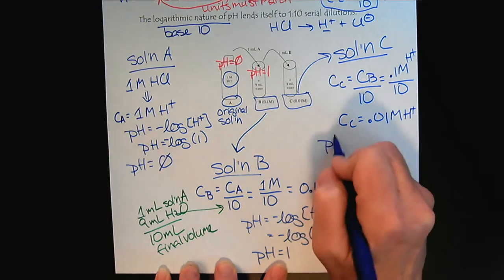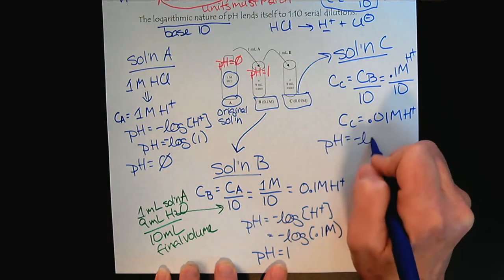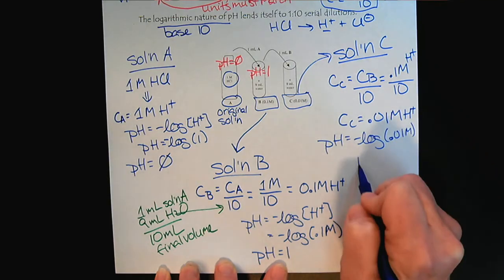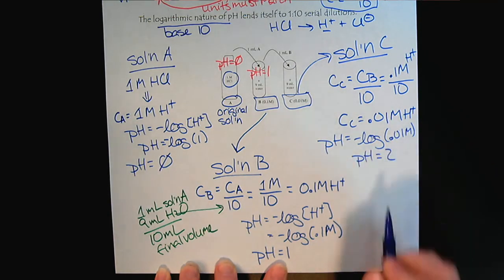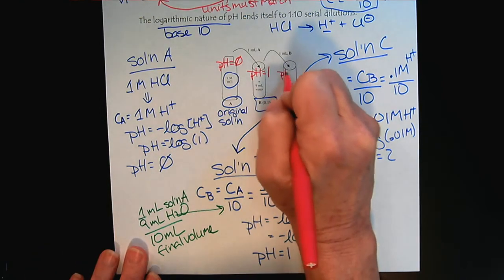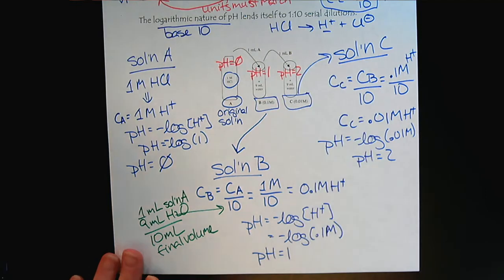So the concentration of solution C will be 0.01 molar H+. And to take the pH, negative log of 0.01 molar, the pH would equal 2. So we'll write that information right here. pH equals 2. So I know that this is an important set of calculations, especially for the microbiology class, if that's in your future. So now that we have the basic understanding, let's practice a little bit more on the next page.